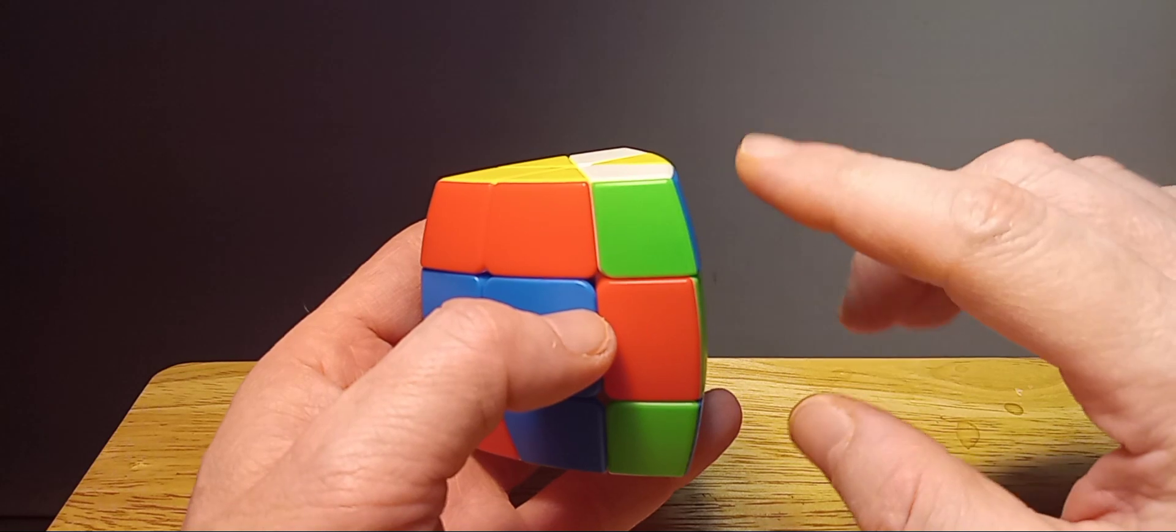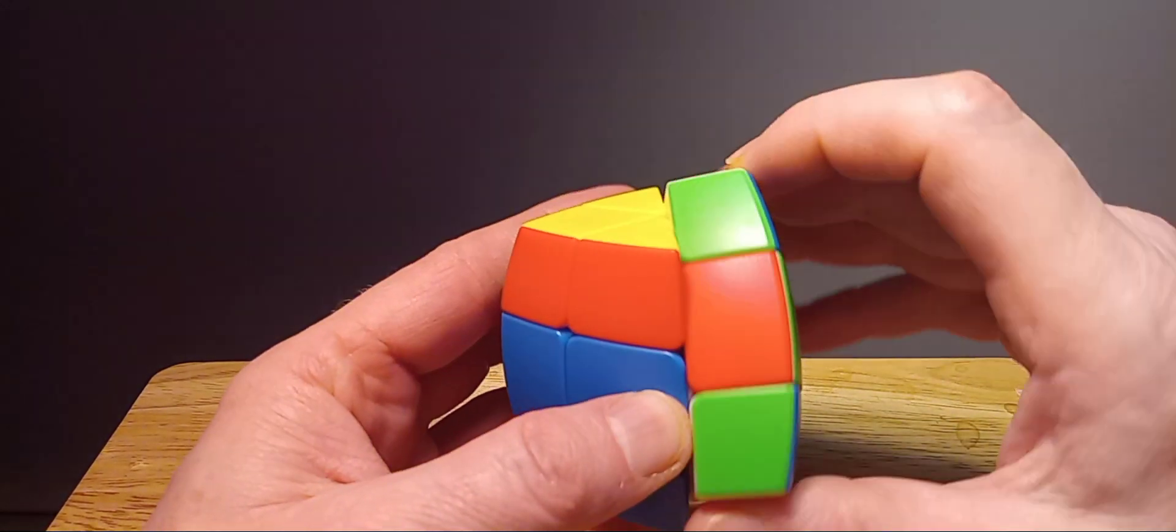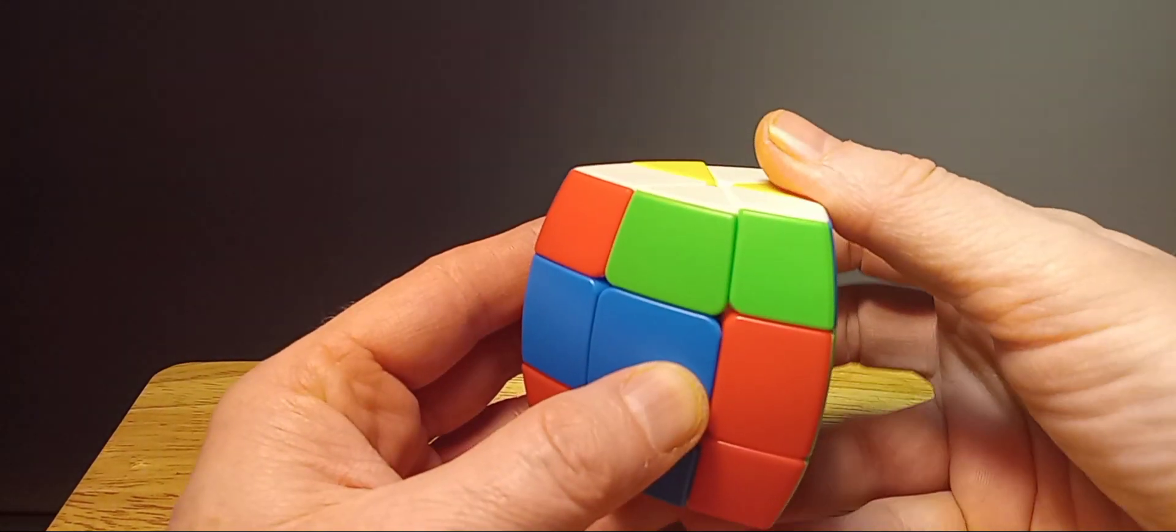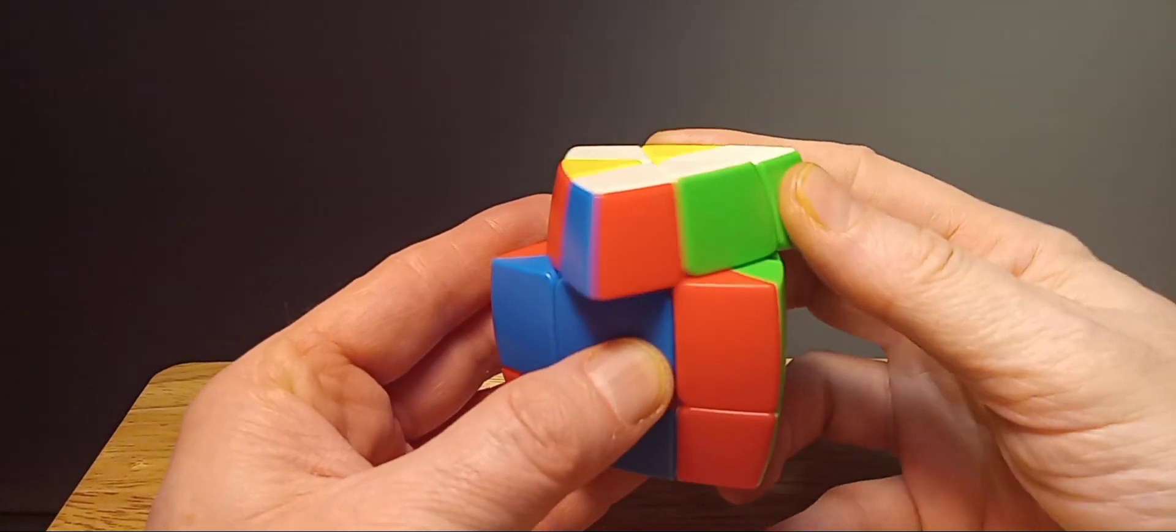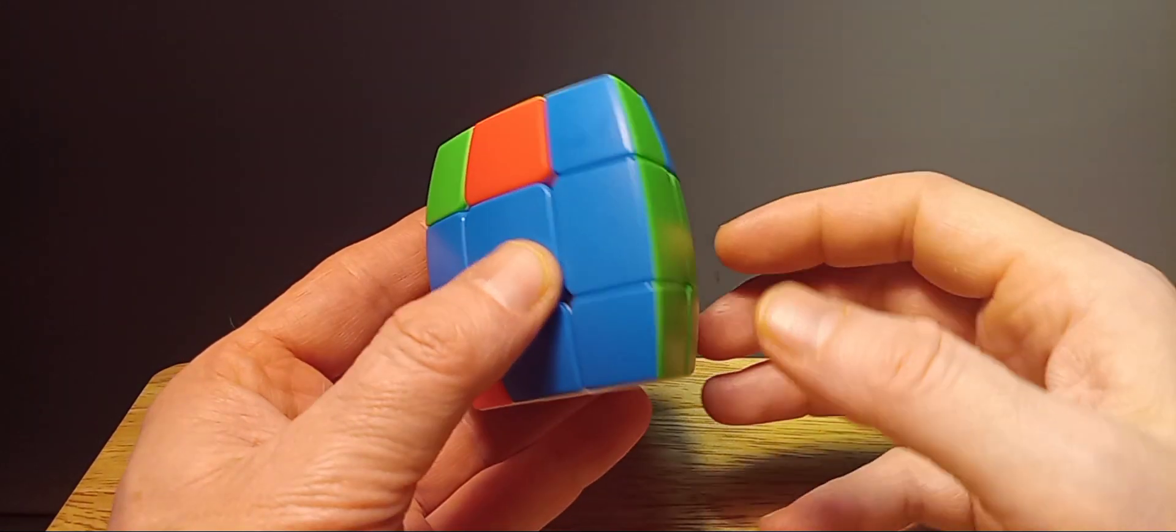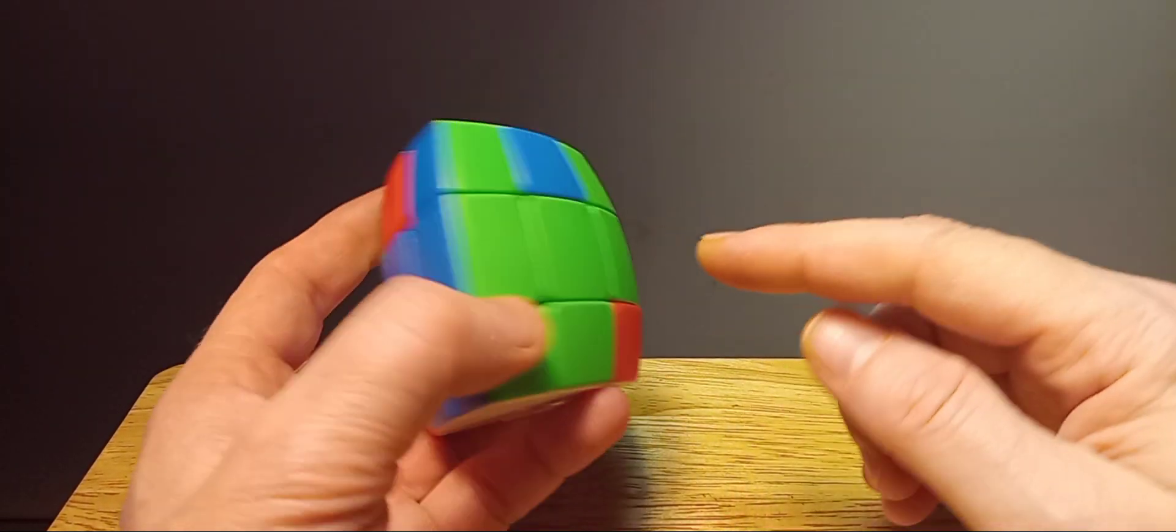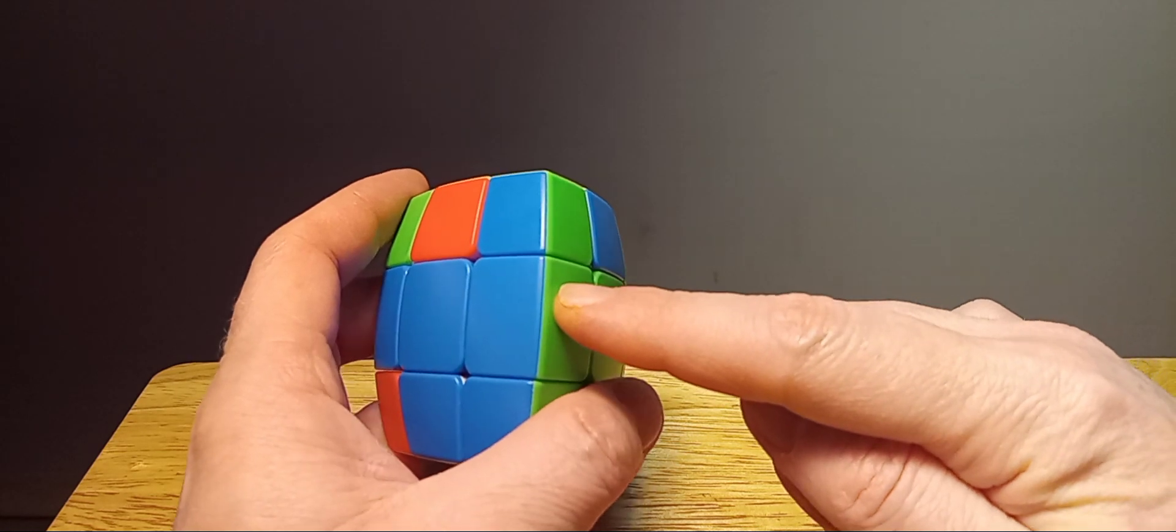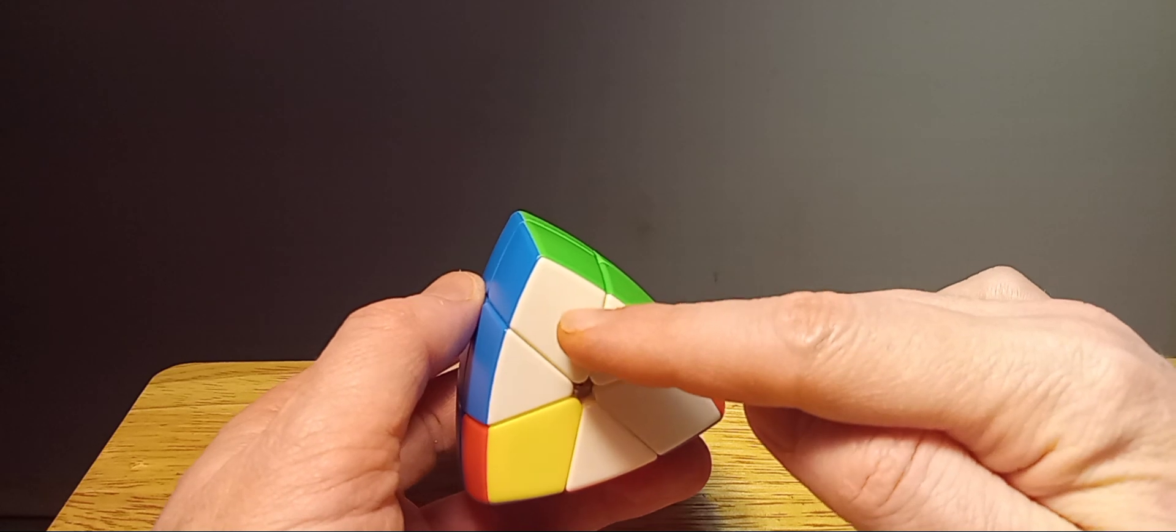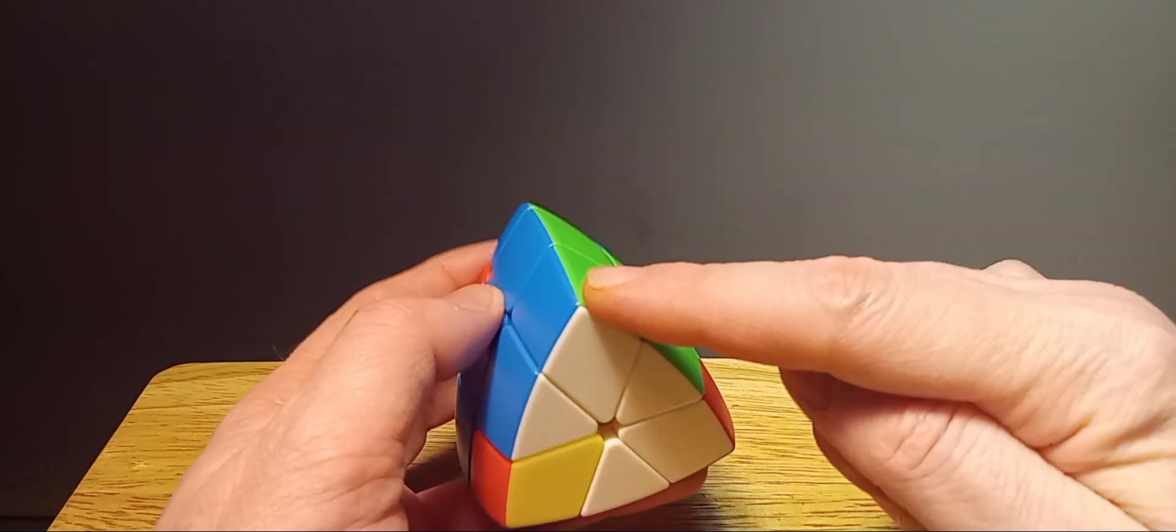So we'll do the same move again: do an R2, U, R2, up invert, and then we do an R2. So see what happened? This green and blue came back over here and it matched with the white green and blue, so we solved that.